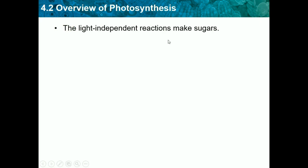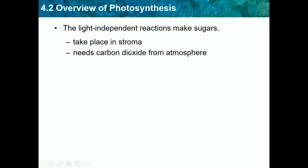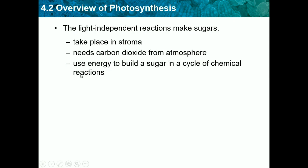Light-independent reactions make sugars — this is the final stage which makes the sugar. These take place in the stroma, which is the gel surrounding all the pieces inside the chloroplast. This cycle needs carbon dioxide from the atmosphere, which is another reason why plants are beneficial — they take CO2 out of the atmosphere. The cycle in the light-independent reaction is also called the Calvin cycle, and we need to know this. Light-independent reaction — think Calvin cycle.